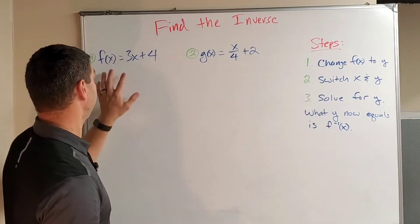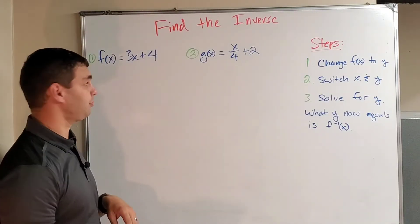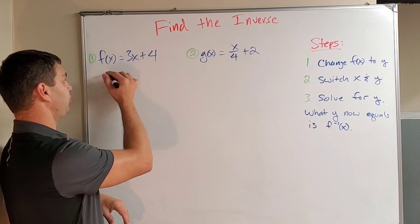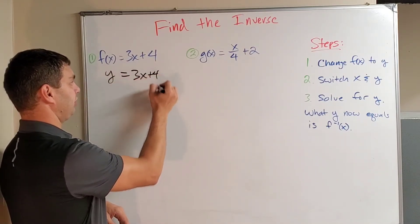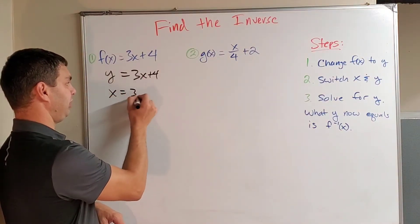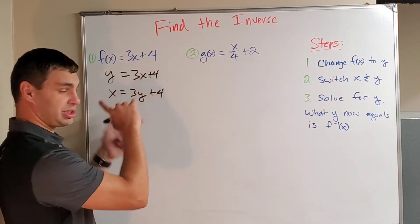Okay, so let's try it. We have f of x for this first one equals 3x plus 4. So first off, I'm going to switch my f of x to be y equals 3x plus 4. Switch my x and y. So now x equals 3y plus 4. They just switch spots.